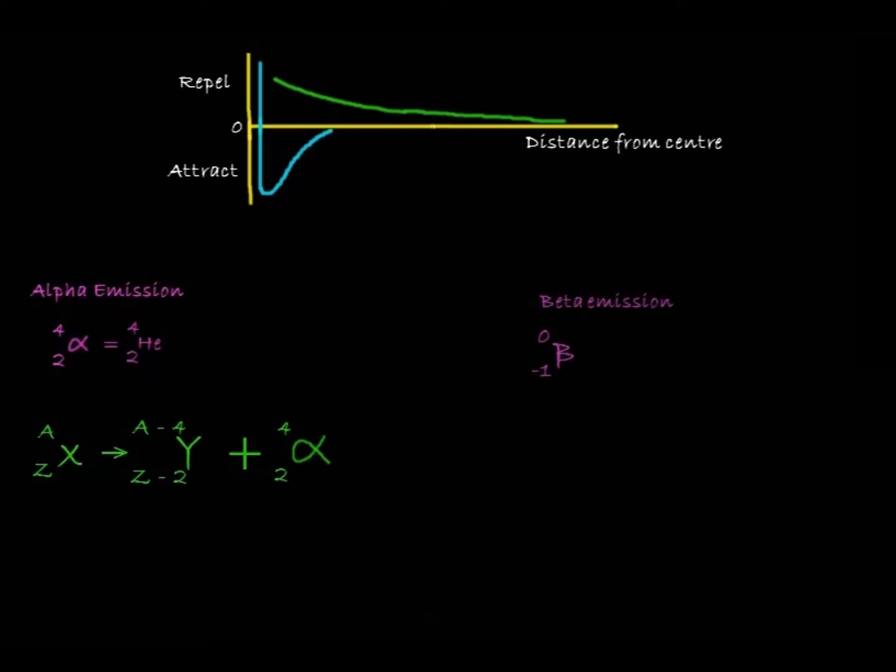When a nucleus emits a beta particle, one of its neutrons is changed into a proton. This changes the element. We can represent beta emission using Feynman diagrams, which we'll learn about later, but we can also use equations. X element changes to Y element with the proton number plus 1, plus a beta minus particle and an antineutrino.